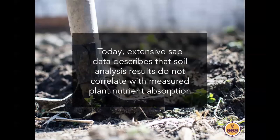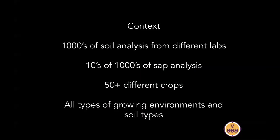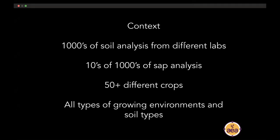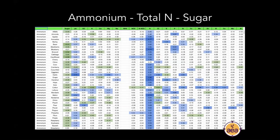With our sap analysis data, we've observed that sap analysis data doesn't correlate to the soil analysis data — those two do not match. I choose to believe the plants because they are an accurate indicator of what's actually happening. The sap analysis data also shows us how nutrients interact with each other inside the plant. The context for our observations is that we've worked with tens of thousands of different soil analyses from different laboratories, tens of thousands of sap analyses on 50-plus different crops, in all types of growing environments and soil types.